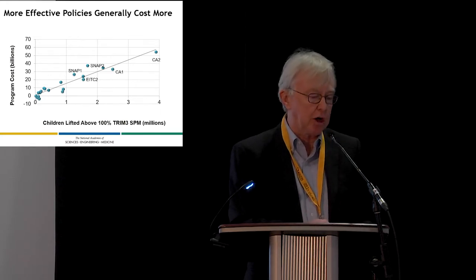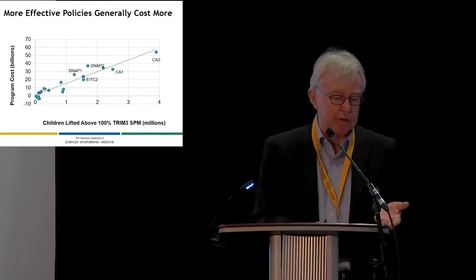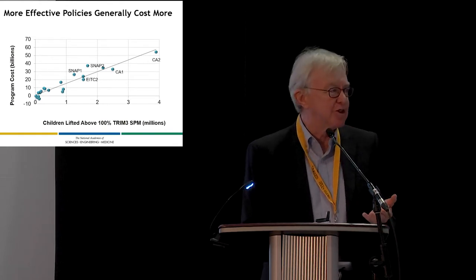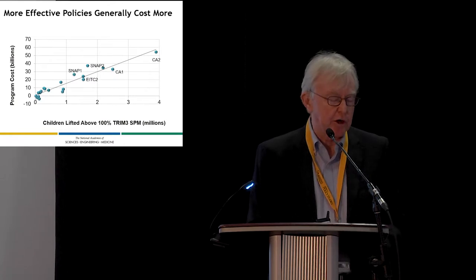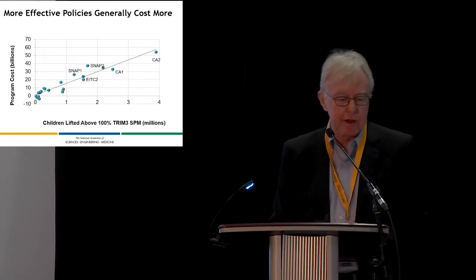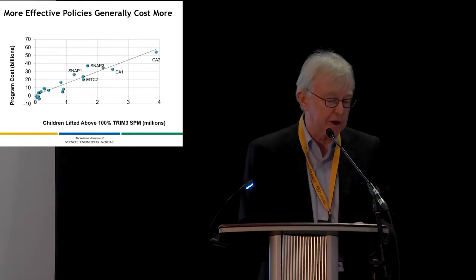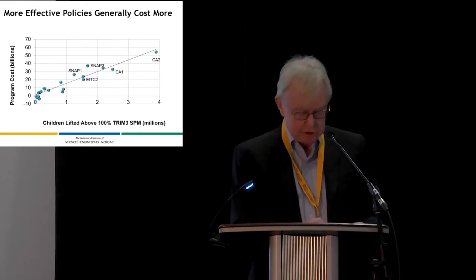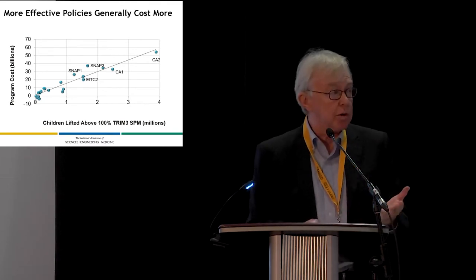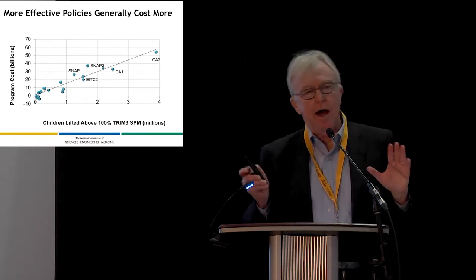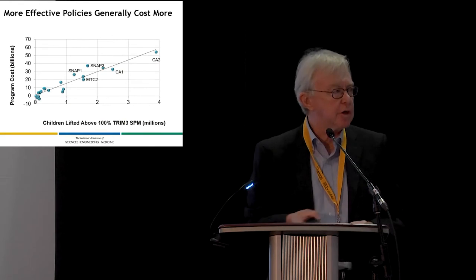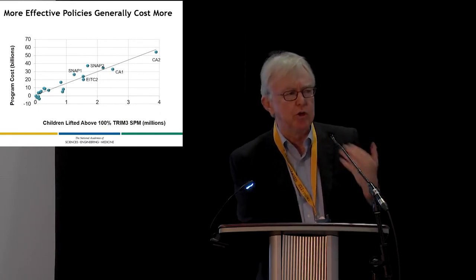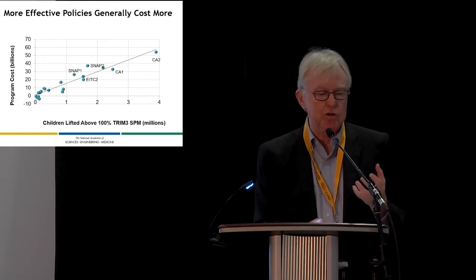We were told to calculate the cost of these programs. The horizontal axis shows how many children are taken out of poverty, and the vertical shows the cost — positive slope, meaning more money spent leads to more children lifted out of poverty. That child allowance with the major impact costs about $50 billion U.S. — about $65 billion Canadian. Our goal was to tell Congress: if you want to do this, here's how much it costs.